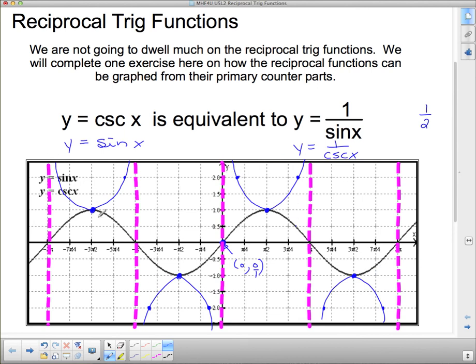All of these asymptotes and then cosecant goes up and down between them. I'm going to show it to you on Desmos.